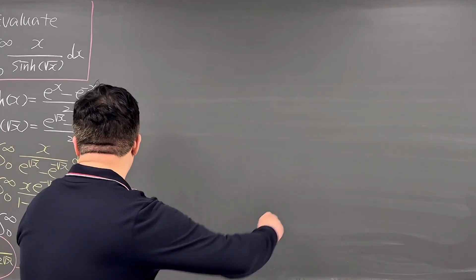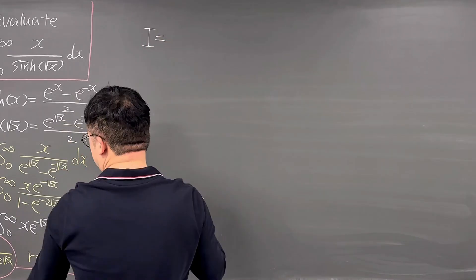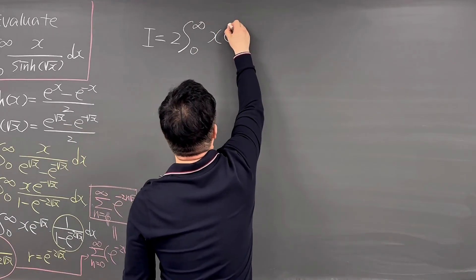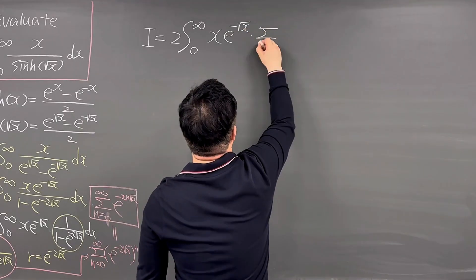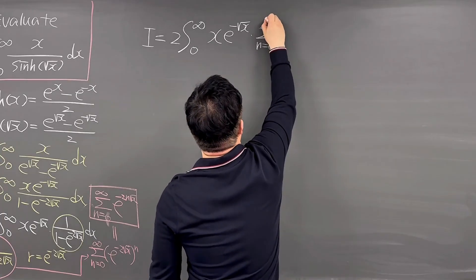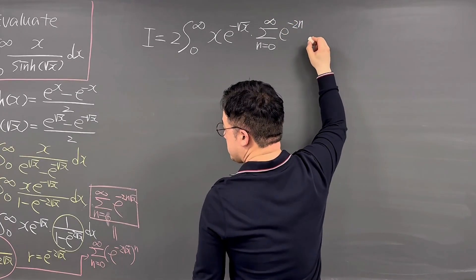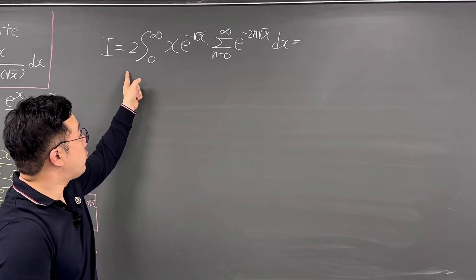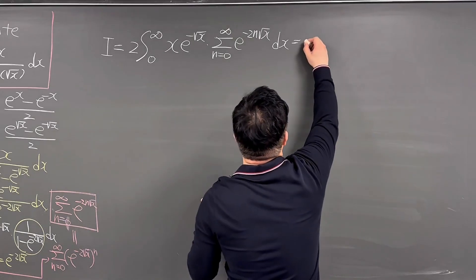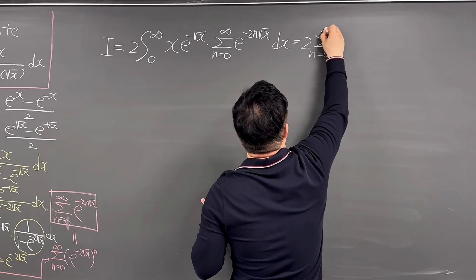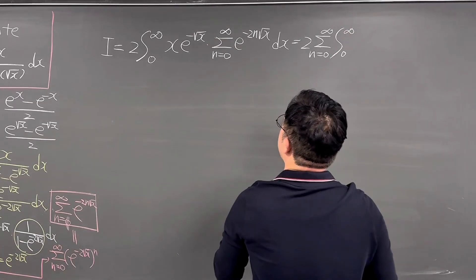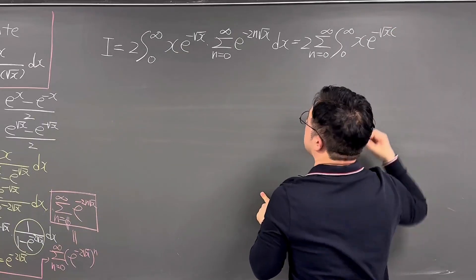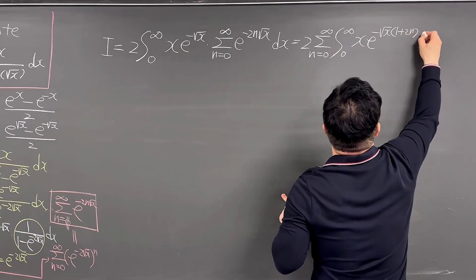Using this, let's rewrite the integral I: it is 2 times the integral from 0 to infinity of x times e^(-√x) times the summation from n=0 to infinity of e^(-2n√x) dx. Pulling the summation sign outside the integral and multiplying those two exponential terms, your integral becomes 2 times the summation from n=0 to infinity times the integral from 0 to infinity of x times e^(-√x · (1 + 2n)) dx.